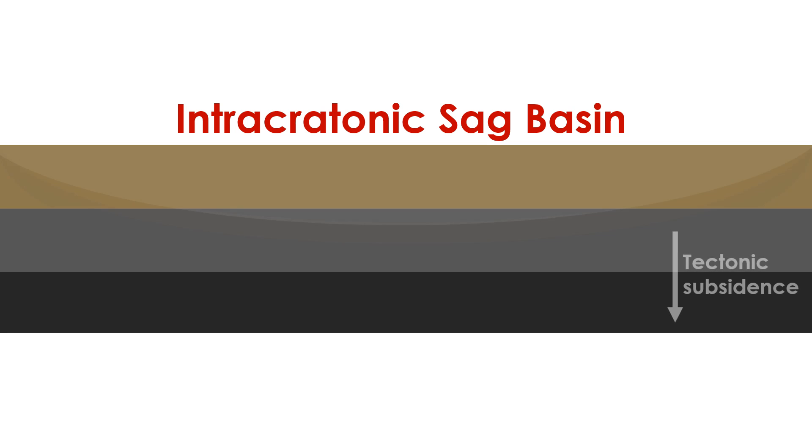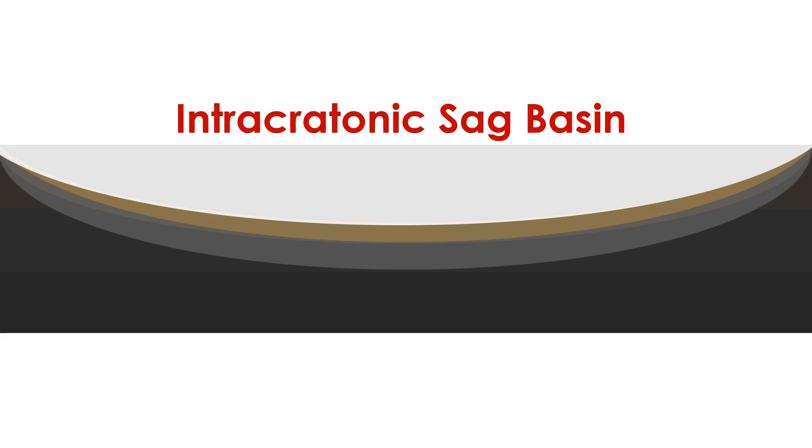Some of the most straightforward basins are intracratonic sag basins. An intracratonic sag basin forms within blocks of Earth's crust called cratons, surrounded by land mass. They're created by the slow subsidence of land. Because they are completely surrounded by land, you often find lakes in these basins, with rivers flowing into them.